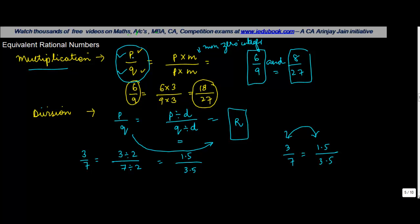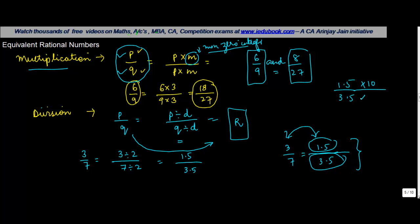In short, whenever you multiply a given rational number by a common nonzero integer M, the resulting fraction is an equivalent rational number. Similarly, when you divide both numerator and denominator by the same number, the result is also an equivalent rational number. You can convert 1.5 upon 3.5 by multiplying both by 10 to get 15 upon 35, confirming that 3 upon 7 equals 15 upon 35.